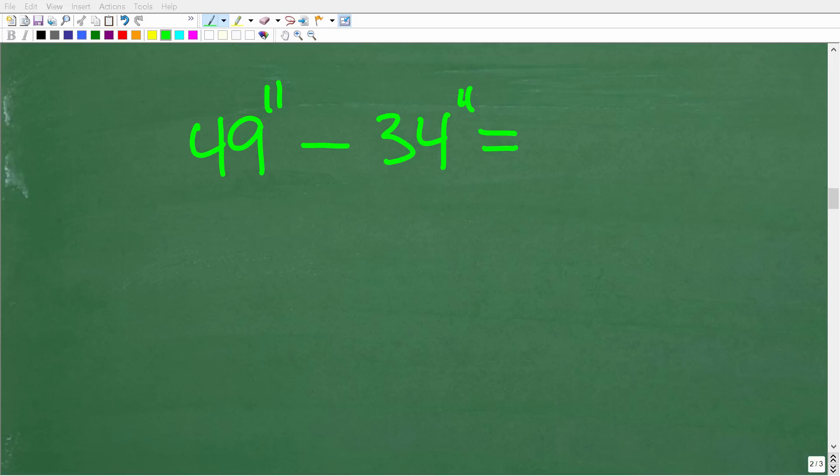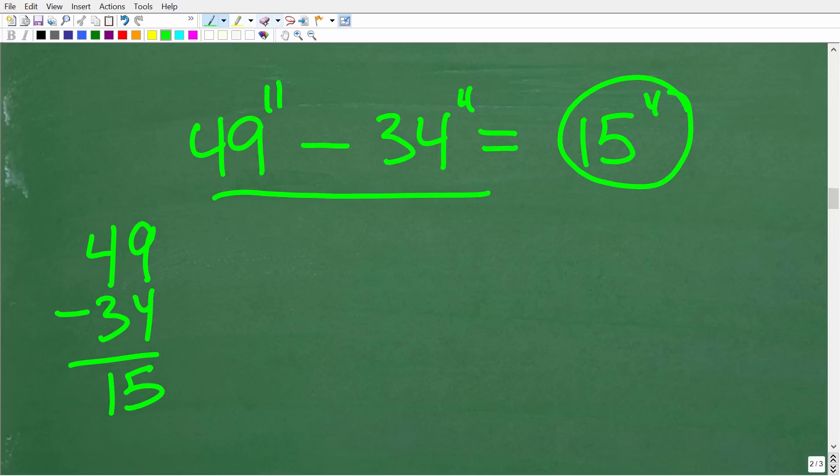So 49 inches minus 34 inches is of course going to be 15 inches. So we're talking about simple arithmetic here. 49 minus 34, of course is 15. Now, 15 inches is a good answer. That is correct. But remember I said, express your answer in terms of feet and inches. So how can we do that if we're given 15 inches?